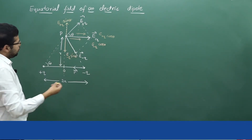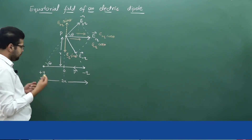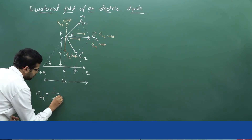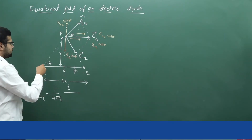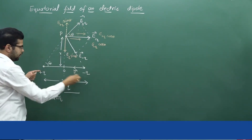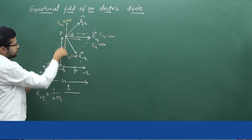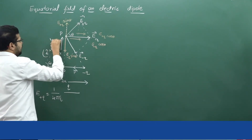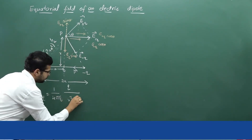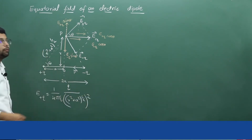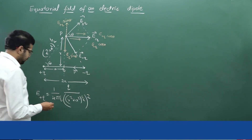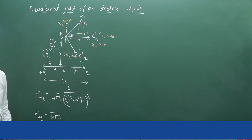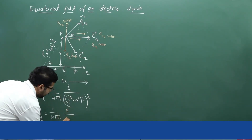Now we will write equations for E of plus q and E of minus q. E of plus q is equal to 1 over 4 pi epsilon naught, multiplied by q divided by r squared. The distance between the charge and the point where we calculate the electric field is the square root of r squared plus a squared. So the distance squared is r squared plus a squared, giving E of plus q = 1 over 4 pi epsilon naught into q divided by (r squared plus a squared).